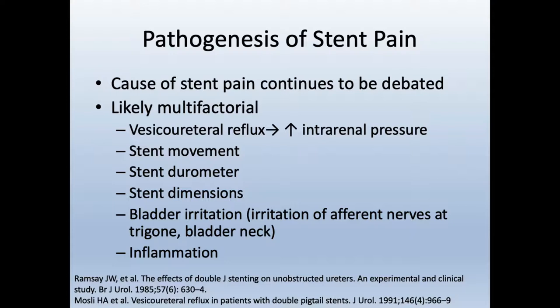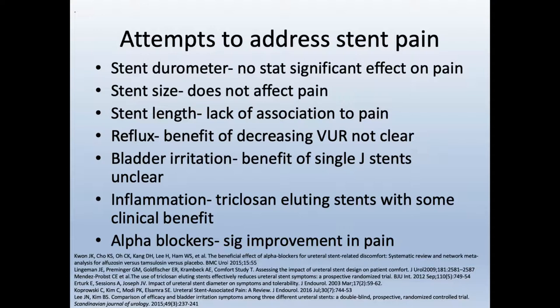What exactly is the pathogenesis of stent pain? There have been various proposed causes which continue to be debated. It's likely multifactorial. Some of the things people have looked into include vesico-ureteral reflux causing an increase in intrarenal pressure, stent movement, stent durometer or firmness, stent dimensions including size and length, bladder irritation from the distal coil irritating the afferent nerves at the trigone and bladder neck, and then inflammation. But do these actually cause pain?